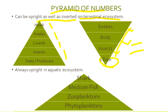Pyramid of numbers is always upright in an aquatic ecosystem. For example, at the lowest trophic level are phytoplanktons, above that zooplanktons, then medium fish, large fish, and then shark.